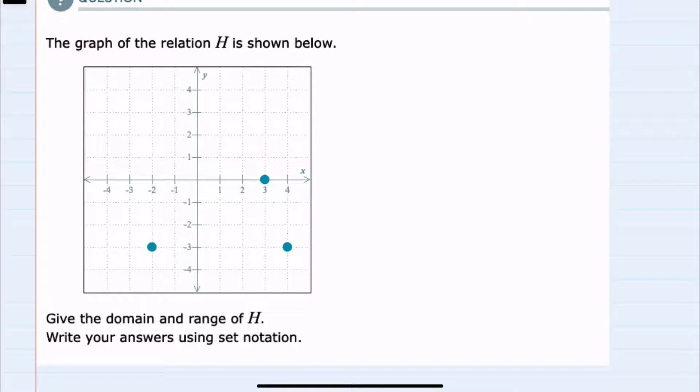So since our graph has three points, I'll start by just giving the coordinates for each of these three points. The first has an x value of negative two and a y value of negative three. The second has an x value of three and a y value of zero. And then the third one has an x value of four and a y value of negative three.